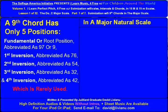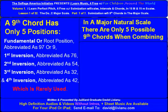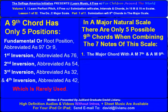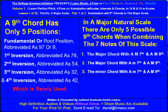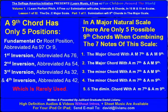In a major natural scale there are only five possible ninth chords when combining the seven notes of this scale: the major chord with a major seventh and a major ninth; the major chord with a minor seventh and a major ninth; the minor chord with a minor seventh and a major ninth; the minor chord with a minor seventh and a minor ninth; and the diminished chord with a minor seventh and a minor ninth.